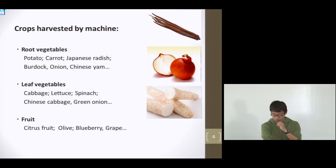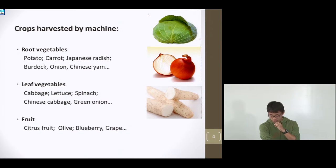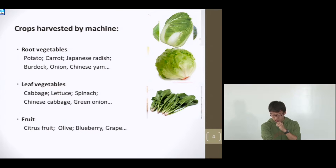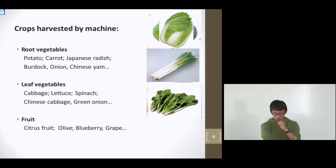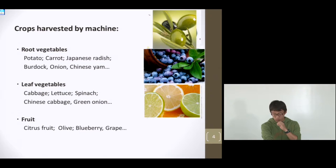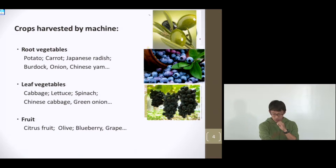And second is leaf vegetables. That is cabbage, lettuce, spinach, Chinese cabbage, green onion are in this group. And lastly, fruit categories. It's citrus, olive, blueberry, grape are in this group.